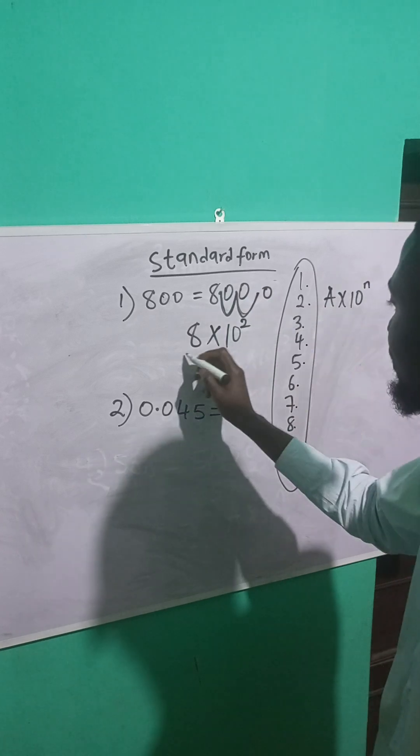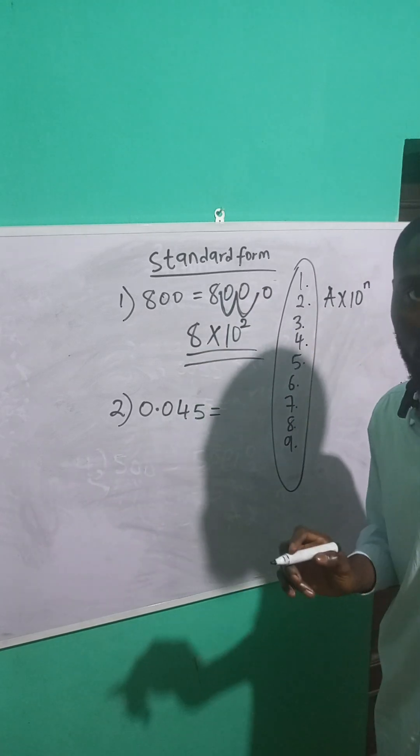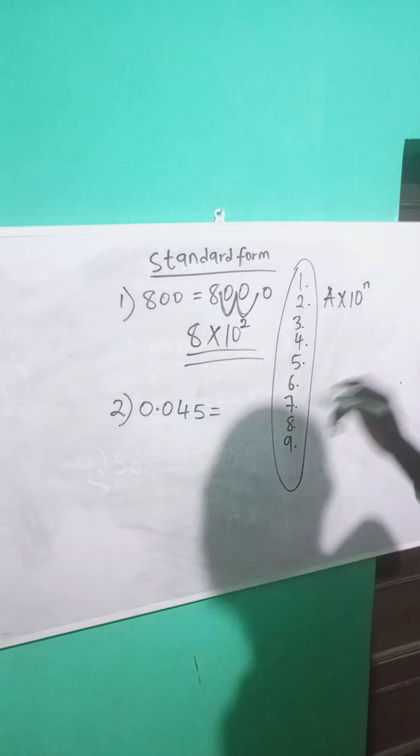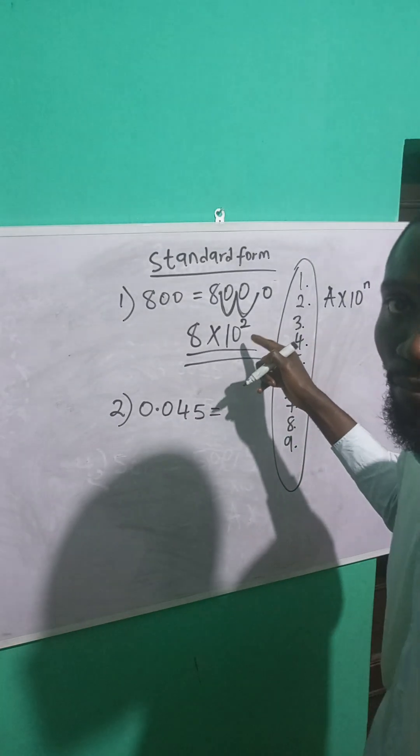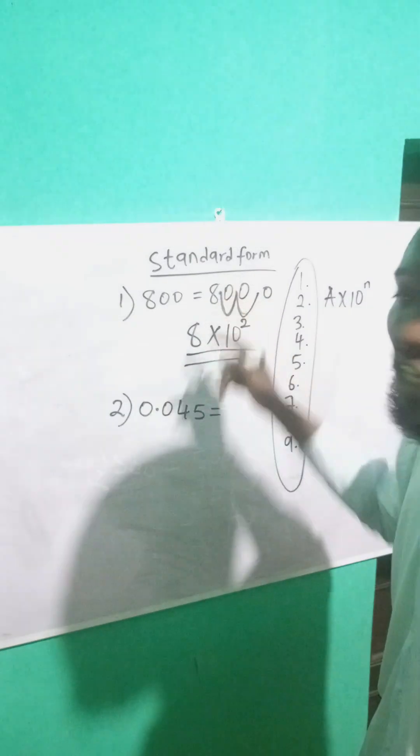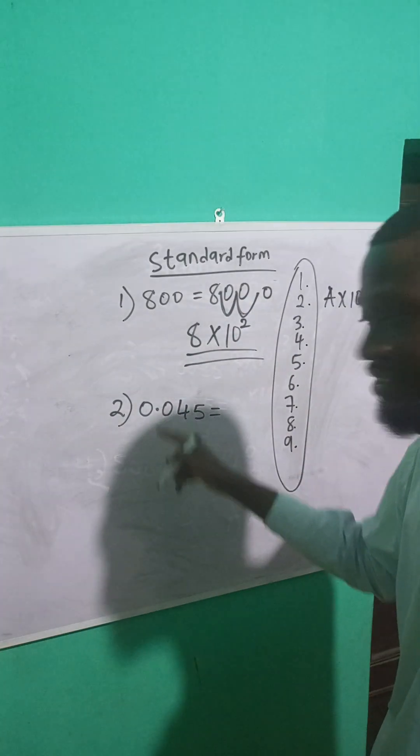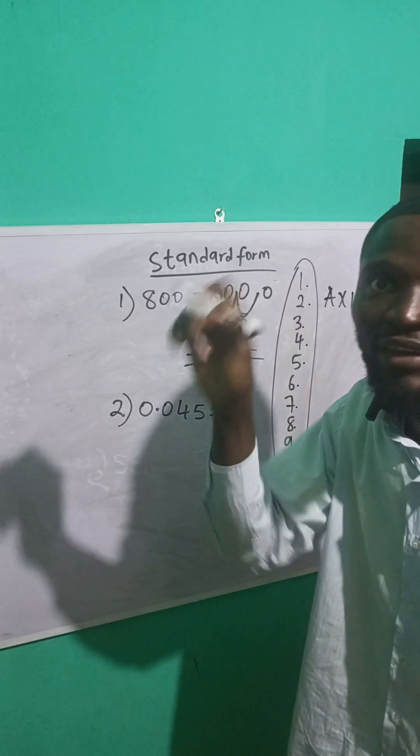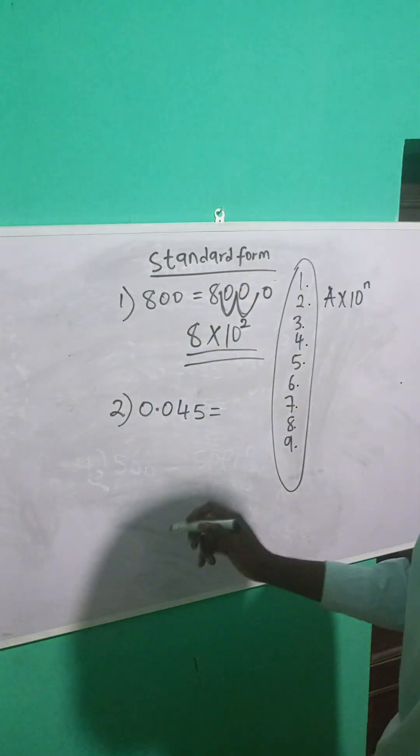So this is just 800 in standard form. This is my answer. Now my answer is in positive form because I moved from the right to the left. If I'm moving from the left to the right, my answer will be negative, my answer will be minus.